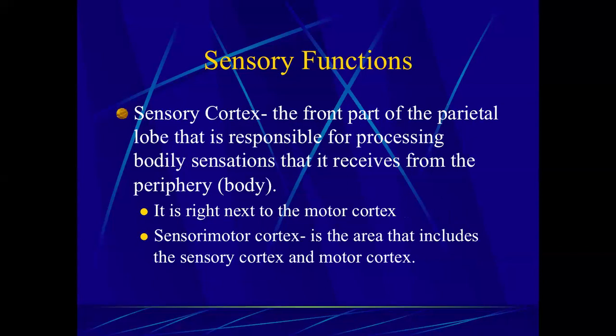Behind the motor cortex is the somatosensory cortex. That sends impulses from the periphery up to the brain as it relates to pressure, touch, temperature, and pain — these are your inputs to the brain. The motor cortex and the sensory cortex are next to one another, so they talk to one another and have cross communication. We oftentimes refer to this as the sensory-motor cortices, which acknowledges the interplay between the two.